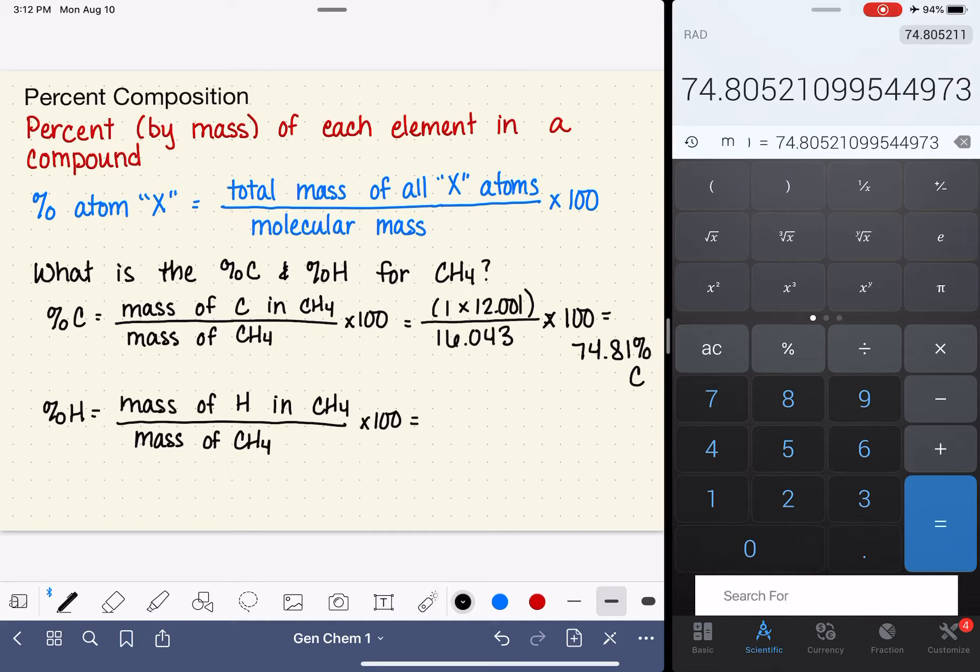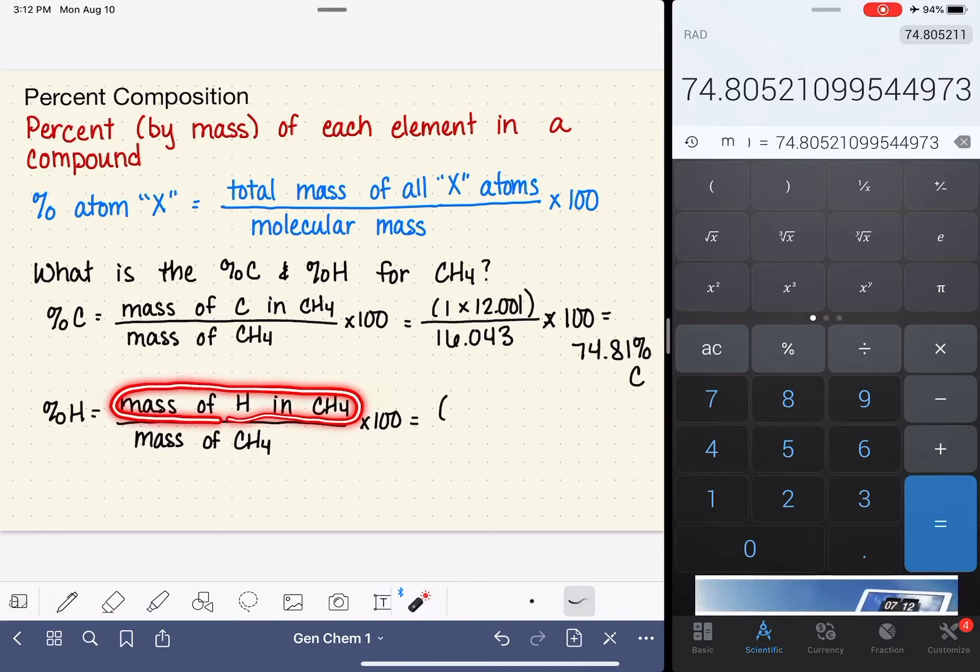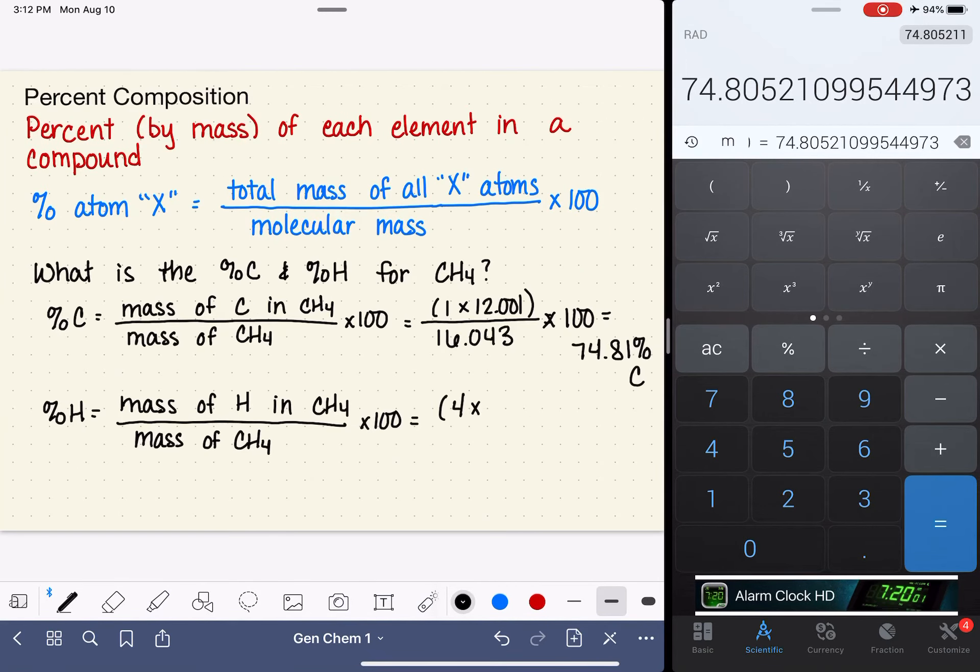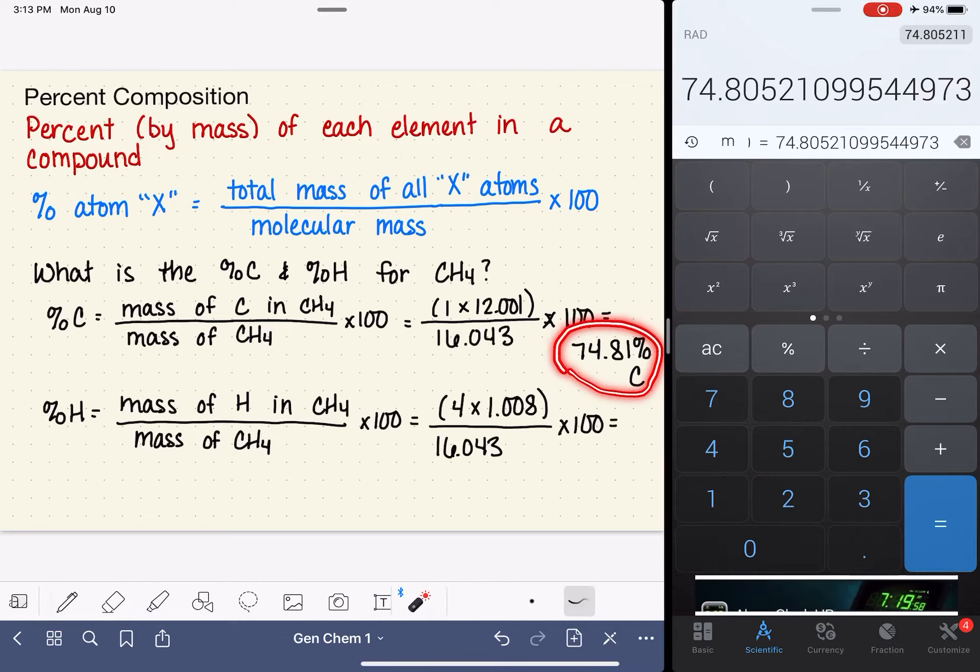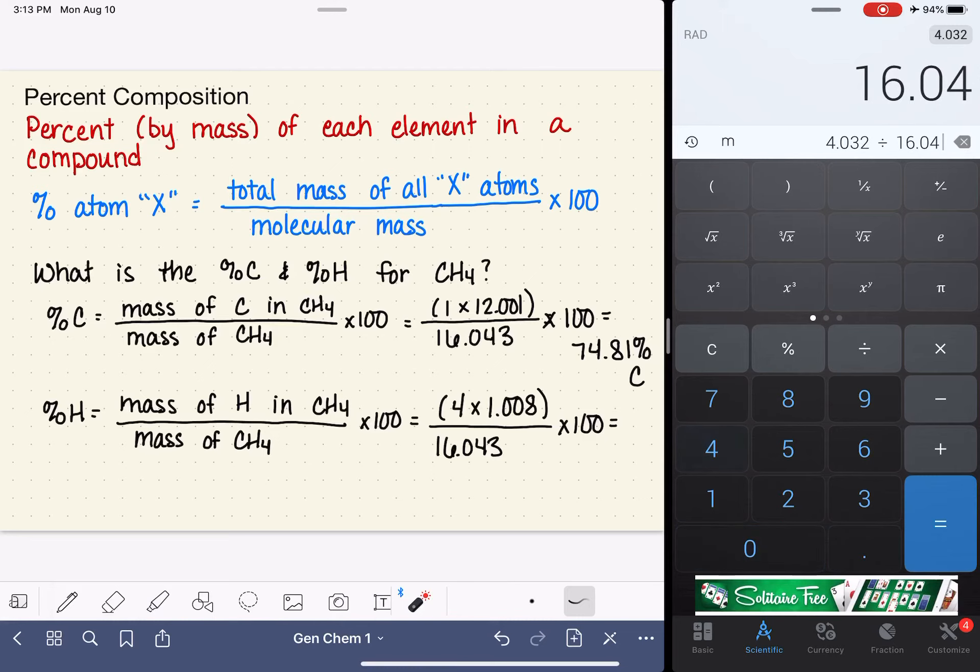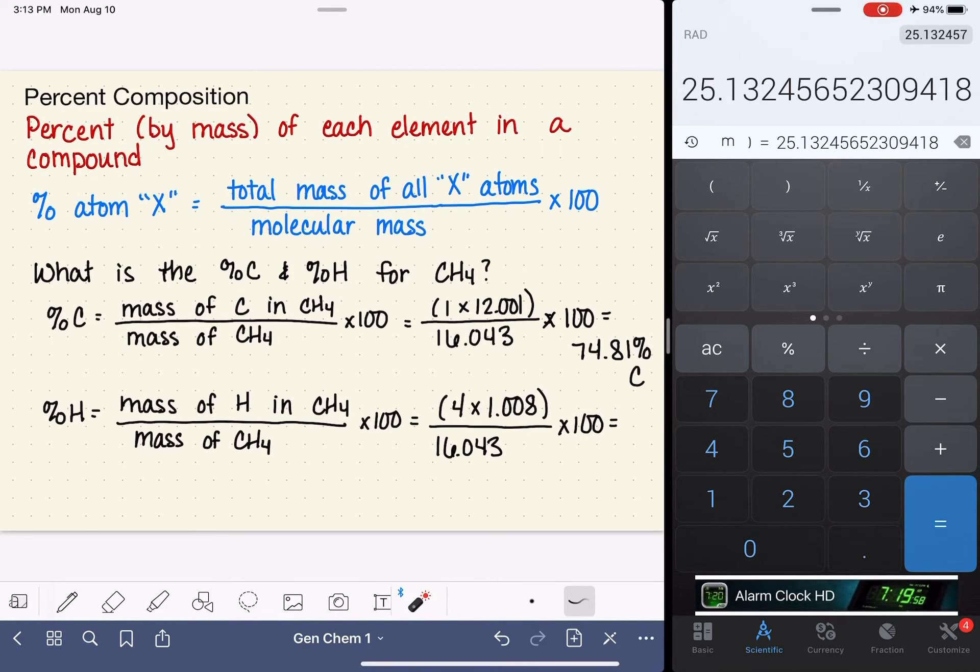Now let's do hydrogen. We're going to do the same type of thing. We want to calculate the mass of all of the hydrogen in CH4. We have four total hydrogen atoms, and each one weighs 1.008 AMUs. So four times 1.008 AMUs, then divide by the molar mass of CH4, 16.043, multiply by 100. Four times 1.008 is 4.032 divided by 16.043 and multiply by 100. We get 25.13% hydrogen.